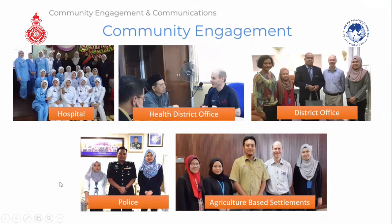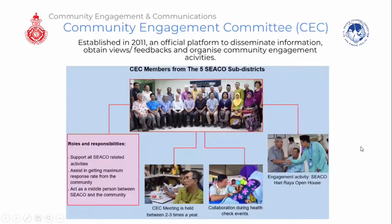Possible stakeholders are mapped out and engaged individually according to their organization — particularly hospitals, district health office, district administrative office, the police office, and agriculture-based settlements where many immigrants work. We formed five community engagement committees whose role is to support SICO-related activities, assist in achieving maximum response rates from the community, and act as liaison persons between SICO and the community.